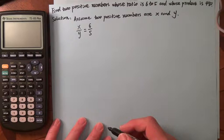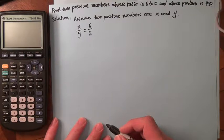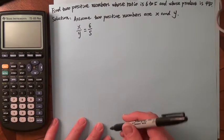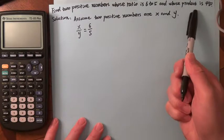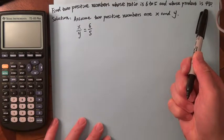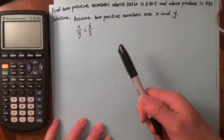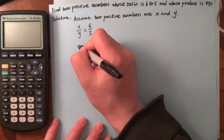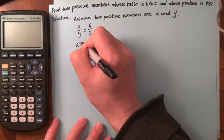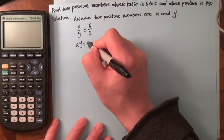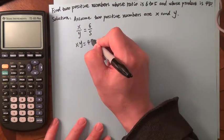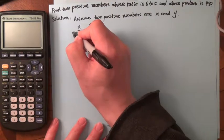The second condition is that the product is 480. That means X times Y has to be 480. So there are two conditions here.